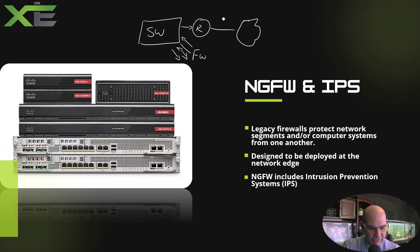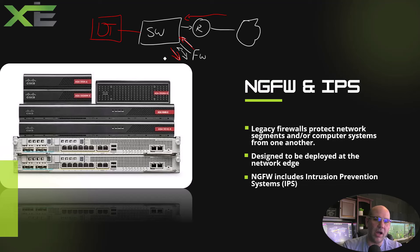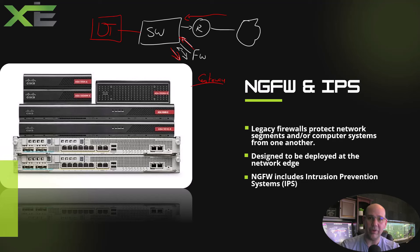As traffic comes back from the internet, the router says: that traffic came from the firewall, so I'm going to send it back to the firewall. The firewall says: I remember that — it came from this particular desktop — and forwards it on. Even though they're not directly connected, we handle all of that by setting default gateways and using some routing, which we'll cover later.